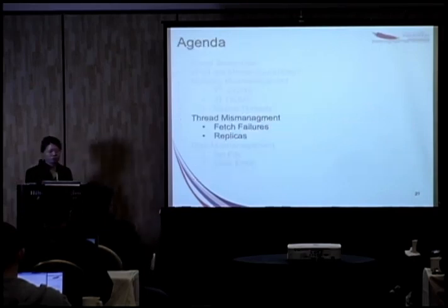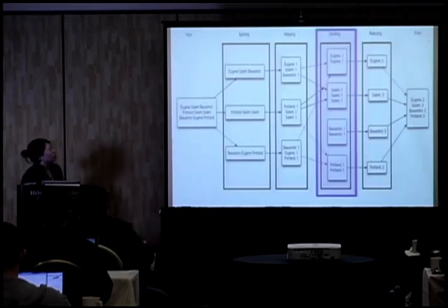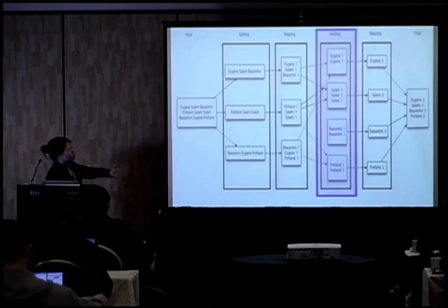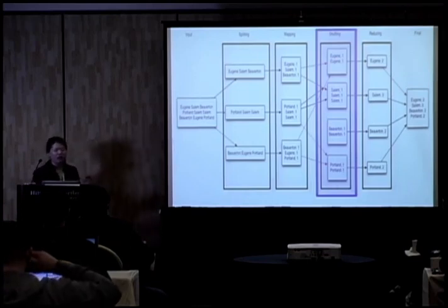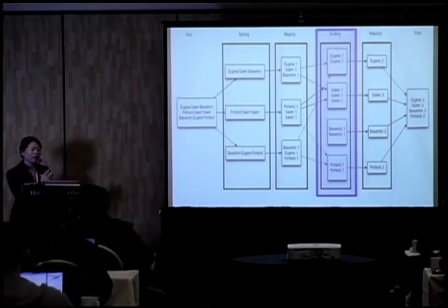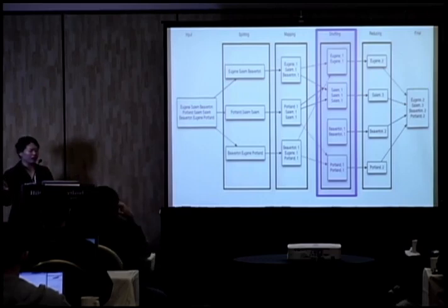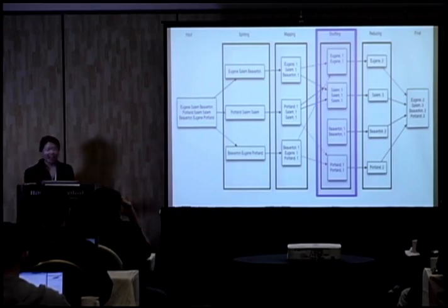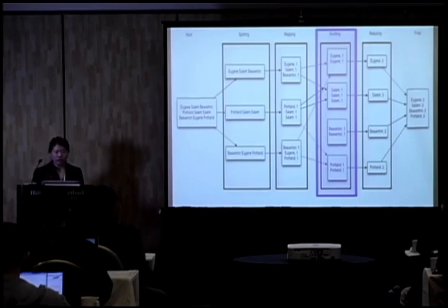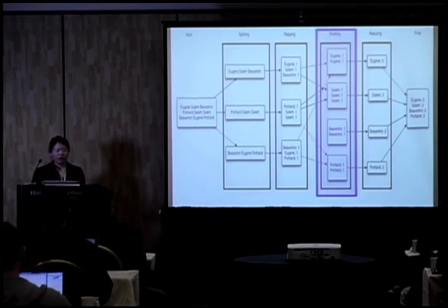On to thread mismanagement. First up is fetch failures. Focusing on the shuffle phase from the WordCount example — this is where fetch failures occur, when reducers are not able to fetch the output from the mappers. I've been debugging fetch failure issues since I started at Cloudera two years ago and I am still debugging them today. Fetch failures can be caused by a hardware issue like a corrupt disk, a misconfiguration, or a Jetty bug — or all of the above.